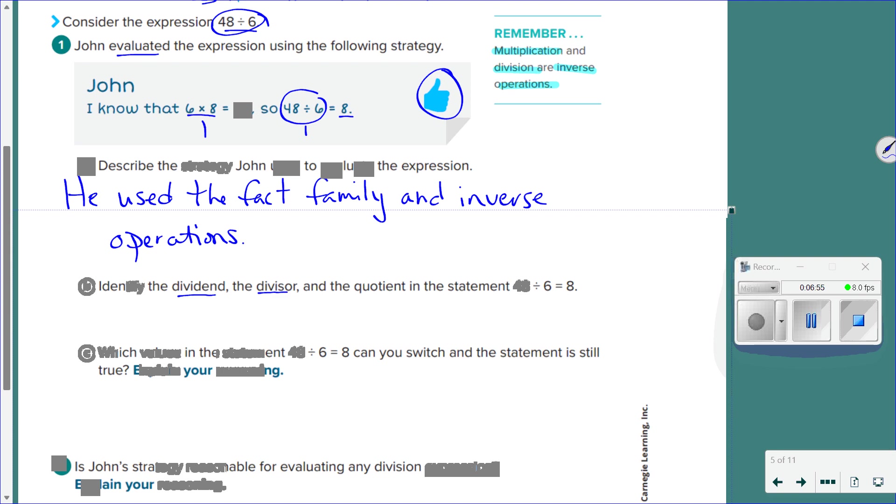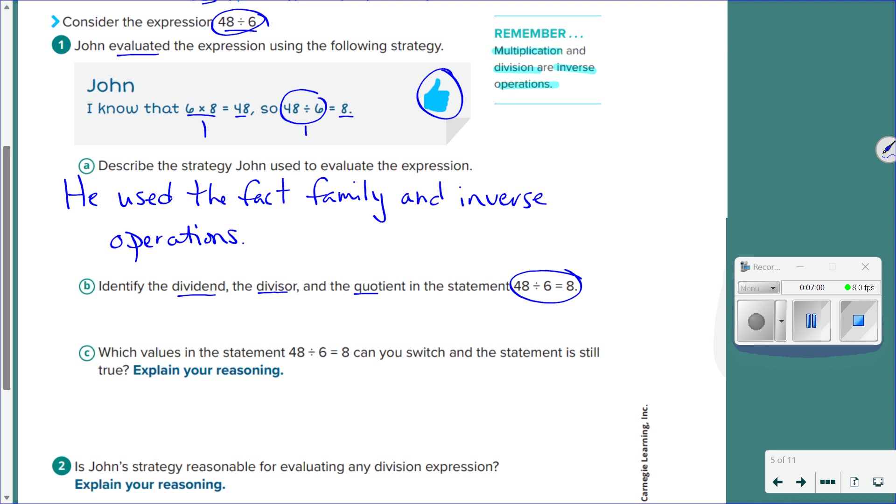Okay. Identify the dividend, the divisor, and the quotient in our statement. 48 divided by 6 equals 8. So which number is which? Which number is my dividend? Alina? 6 is the dividend? Oh, wait a minute. This is how it sounds. It's the one you're dividing into. Dividend. What are you dividing into? Nathan? 8. Oh, goodness. Well, we only have one option left, so the dividend is 48.